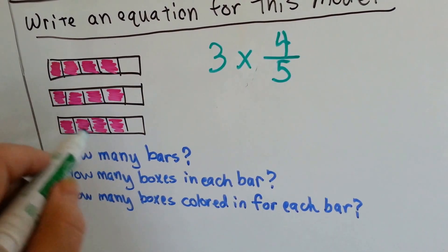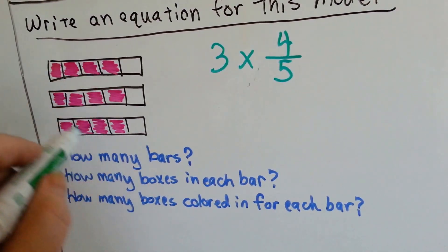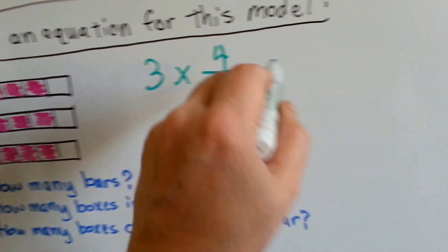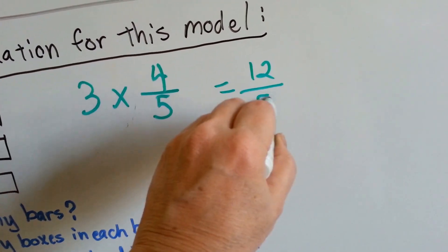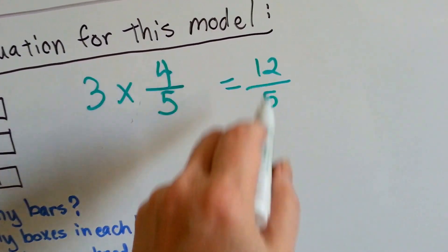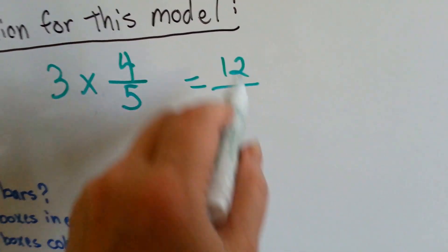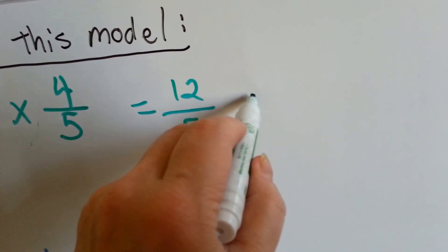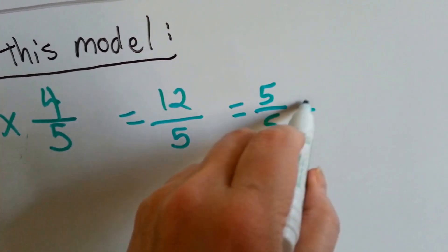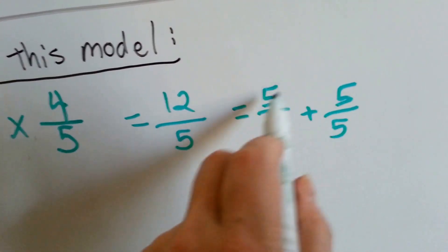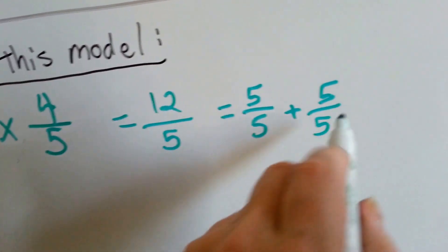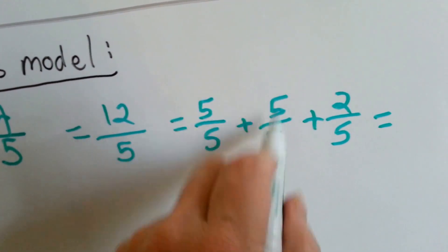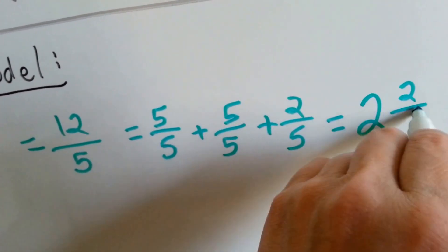How many do you see that are pink? Four, eight, twelve-fifths. Now, how many five-fifths can we get out of this, so that we can simplify it? We can get one five-fifths and another five-fifths. That's ten-fifths. And then there's little two-fifths left over. So that equals one, two, and two-fifths.